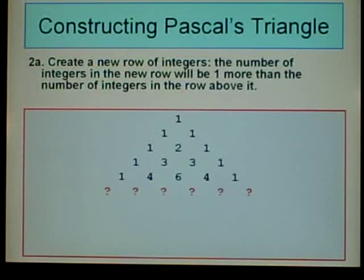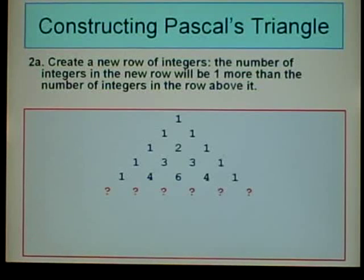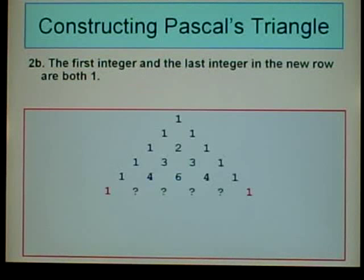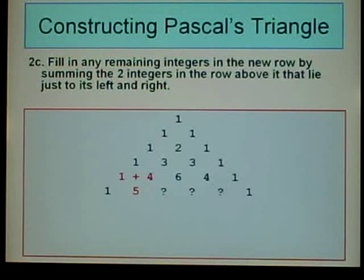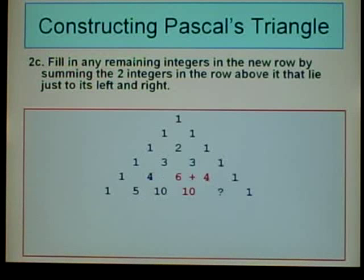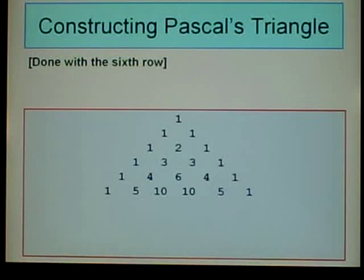We're going to create a sixth row. We have 5 integers in the row above, so we'll have 6 integers in this row. The first and last integers are both 1. For the remaining unknowns: 1 plus 4 equals 5; 4 plus 6 equals 10; 6 plus 4 equals 10; 4 plus 1 equals 5. And we're done with the sixth row.